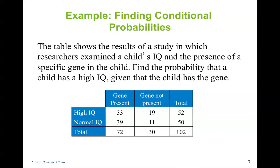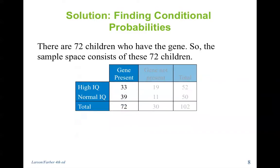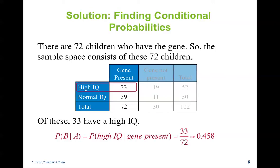A table shows the results of a study examining a child's IQ and the presence of a specific gene. Find the probability that a child has a high IQ given the child has the gene. There are 72 children who have the gene, so our total is 72. Even though there are 102 total in the chart, we are given that the gene is present. The probability of high IQ given the gene is 33 out of 72, which is 0.458.